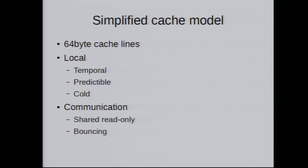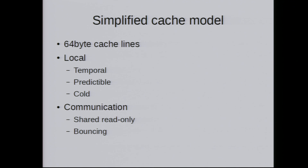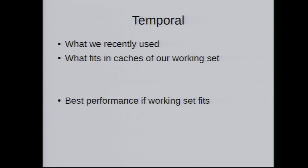For communication, the first case is shared read-only — that's the easy case. When data is shared read-only, it gets distributed or duplicated into different caches, and it's basically like local. The interesting case for communication is bouncing: when you're writing something that another core is reading, or both are writing, there has to be message passing between cores as well.